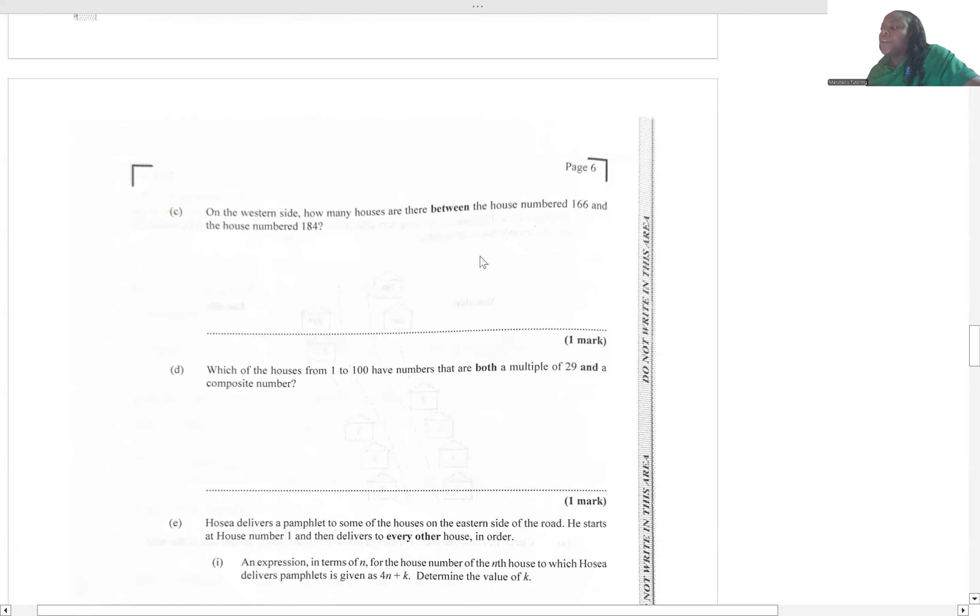On the western side, how many houses are there between the house number 166 and 184? Very similar, but the key thing that they want here is between. So we're going to exclude that integer now.